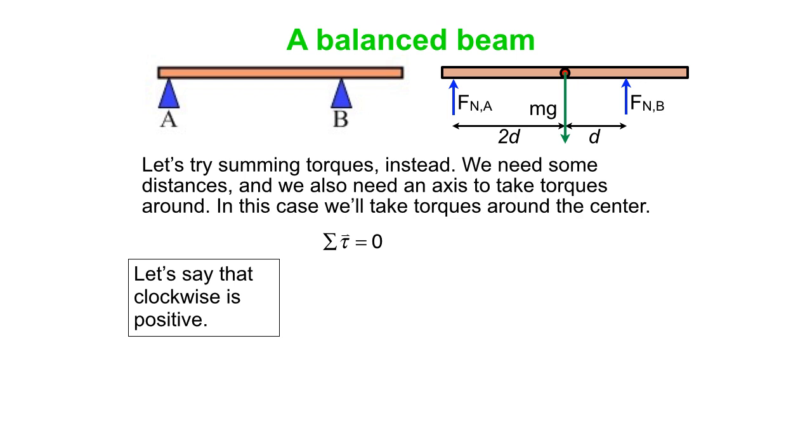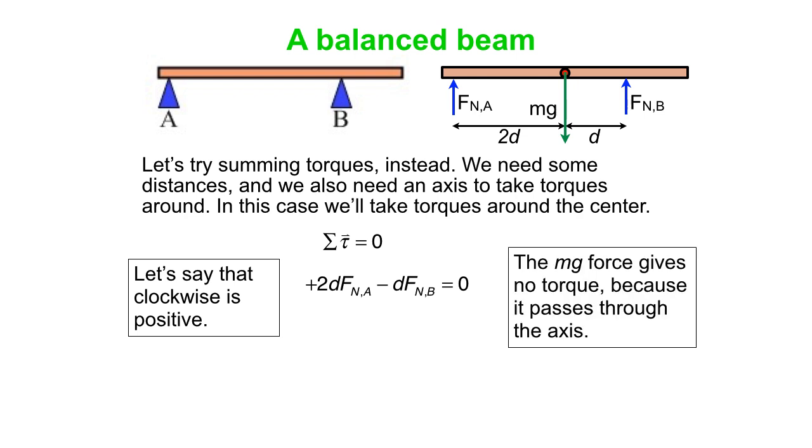So the sum of all the torques has to be zero. We'll add up the three torques. We'll say clockwise is positive. So the one from scale A is a clockwise torque, while the one from scale B is a counterclockwise torque. And the Mg force gives no torque because it passes through the axis. So we didn't know what the length of the beam was, but that's okay. The D here cancels out. So this tells us that 2 times FnA is FnB. Well, that's useful.